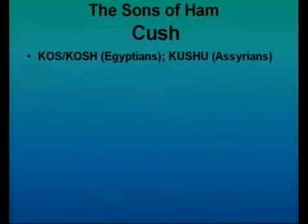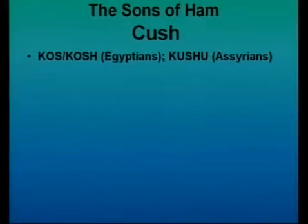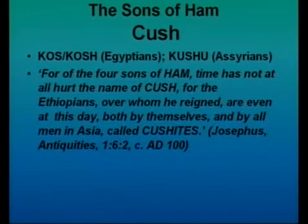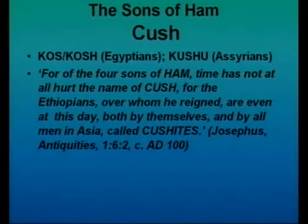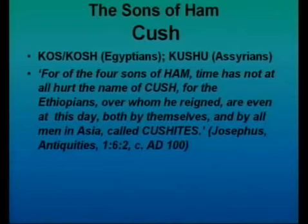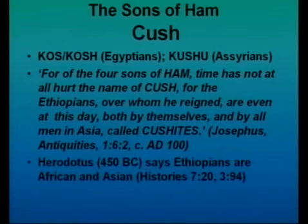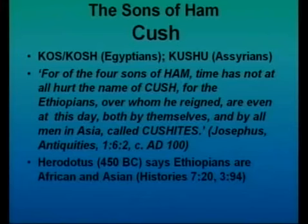Now let's look at some of the sons of Ham. Cush being one of the most famous — it basically became known as what we call today the area of Ethiopia. The Egyptians referred to it as Kos or Kosh, the Assyrians as Cushu. Josephus says: 'The Ethiopians over whom he reigned are even at this day, both by themselves and by all men in Asia, called Cushites.' Herodotus, a pagan historian from the 5th century BC, also confirms that they spread both into Africa and Asia.